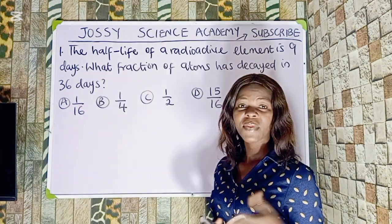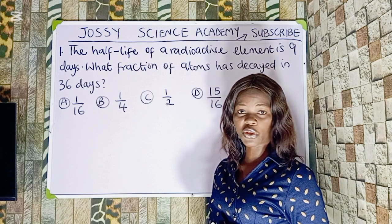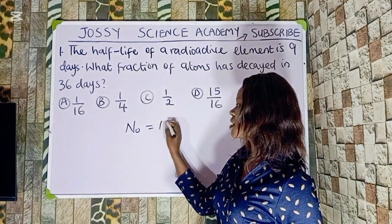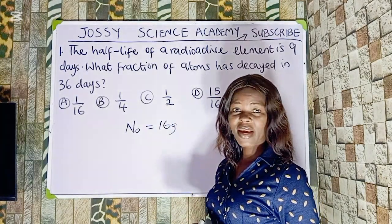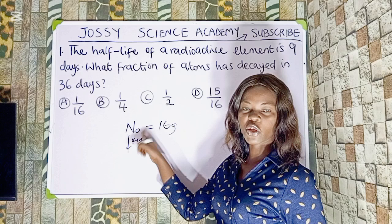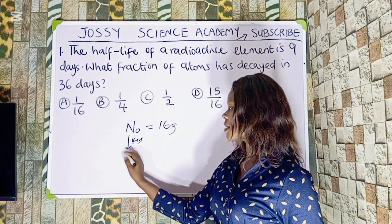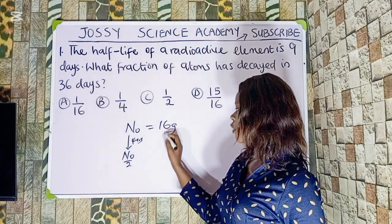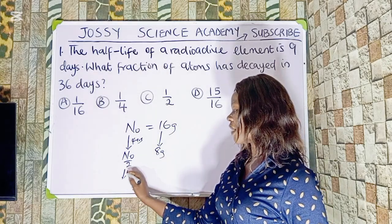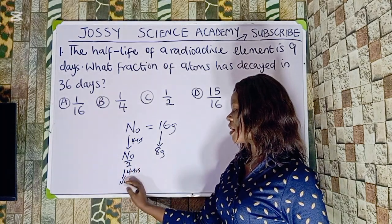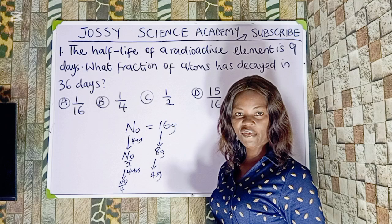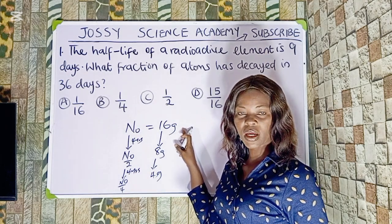We must understand that half-life is the time taken for an atom to decay to half of its original value. For example, if the number of atoms in an element is 16 grams and the half-life is 4 years, after 4 years this atom decays to half its original value — that is L0 over 2, which becomes 8 grams. If it undergoes another half-life, it decays to L0 over 4, giving 4 grams. That is what we mean by half-life: the time taken for an atom to decay to half of its original value.